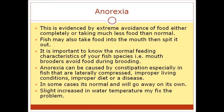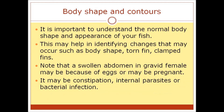In some cases anorexia is normal and will go away on its own, and a slight increase in water temperature might fix the problem. For body shape and contours, it is important to understand the normal body shape and appearance of your fish. This may help in identifying changes such as body shape, torn fins, and clamped fins. Note that a swollen abdomen in a gravid female may be because of eggs or pregnancy, but it may also indicate constipation, internal parasites, or bacterial infection.